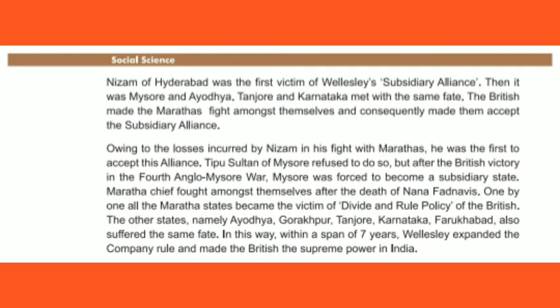Tipu Sultan of Mysore had initially refused, but the Britishers defeated him in the Anglo-Mysore War, so Mysore had to accept the Subsidiary Alliance. The Maratha chiefs also had to fight against the British. Other states — Ayodhya, Gorakhpur, Tanjore, Karnataka, and Farukhabad — faced the same problem. Within just 7 years, Wellesley expanded the company's rule extensively and made the British the supreme power across the whole of India.